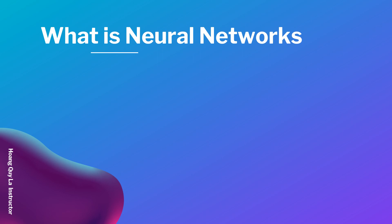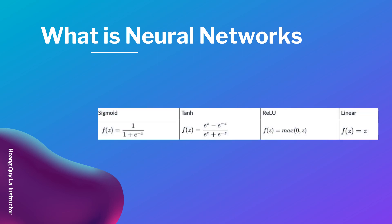The activation function defines the neuron's output. The commonly used activation functions in neural networks are: the sigmoid function f(z) = 1 / (1 + e^(-z)), the tanh function f(z) = (e^z - e^(-z)) / (e^z + e^(-z)), the ReLU function f(z) = max(0, z), and the linear function f(z) = z.